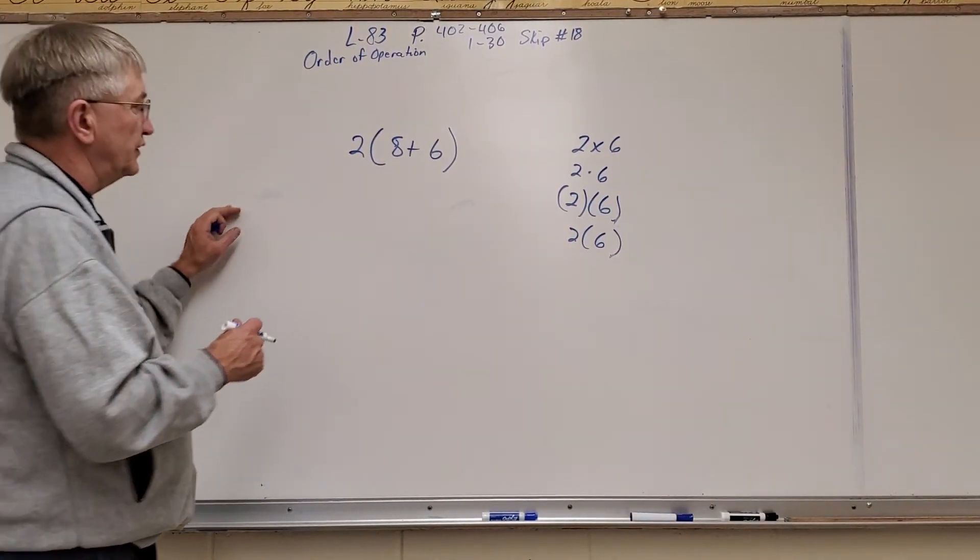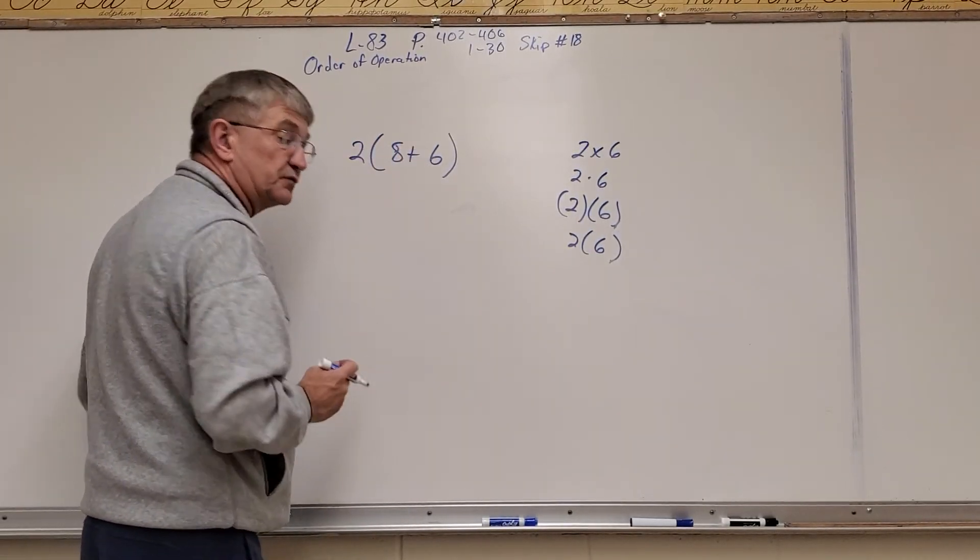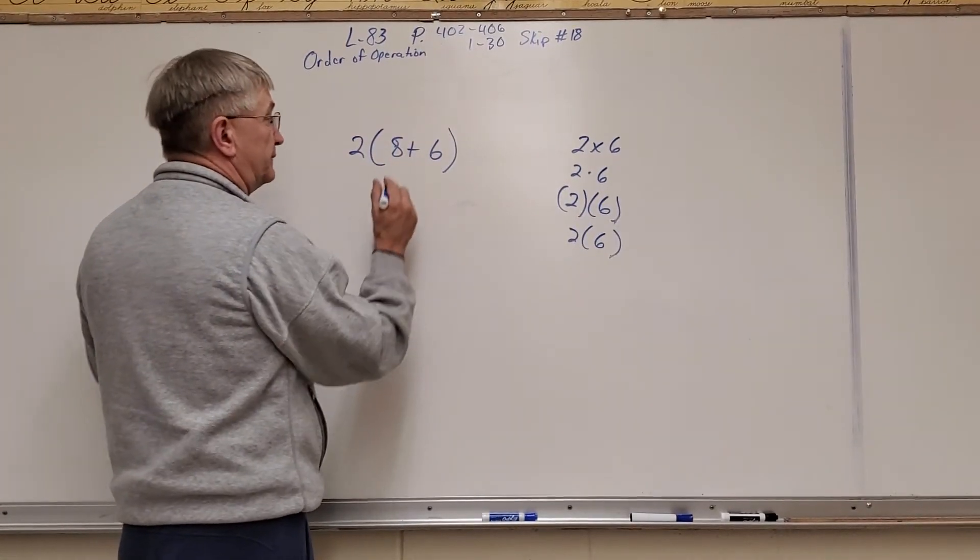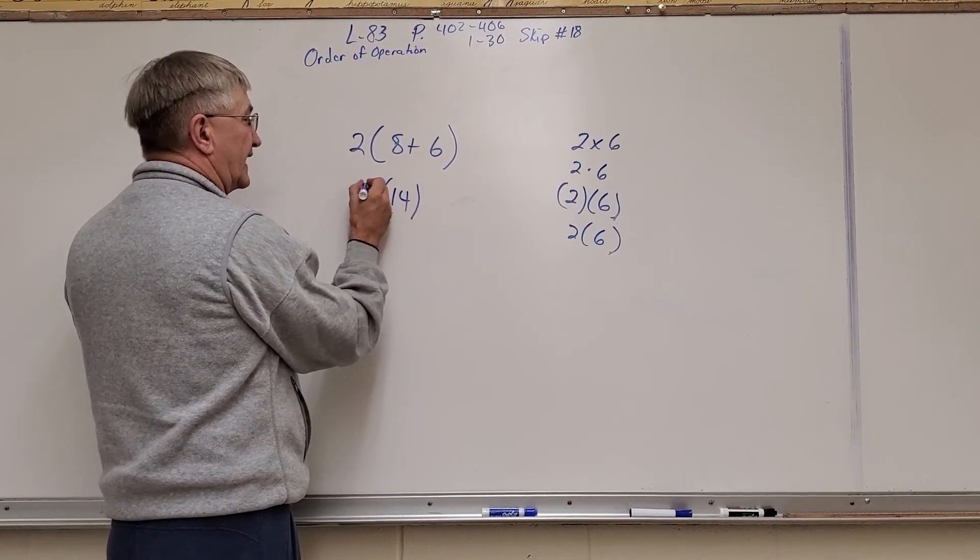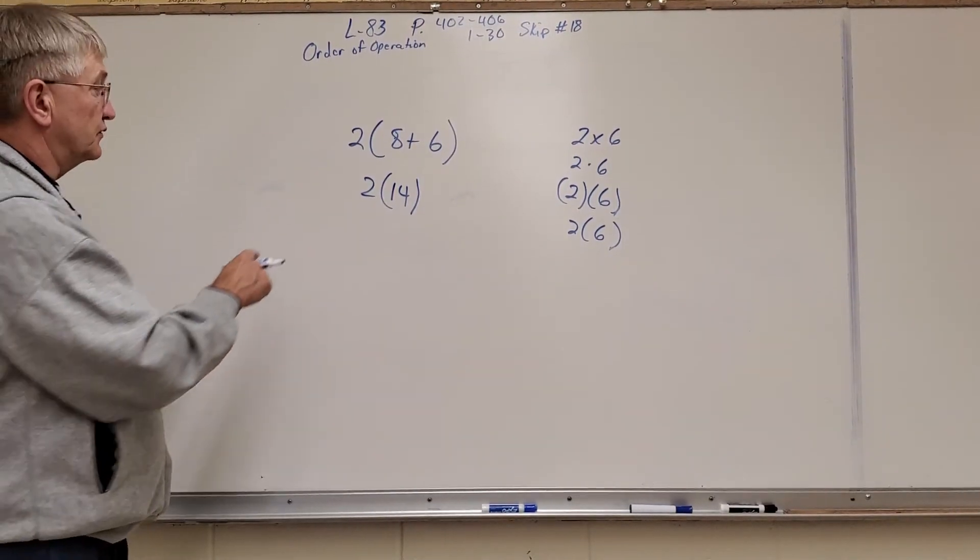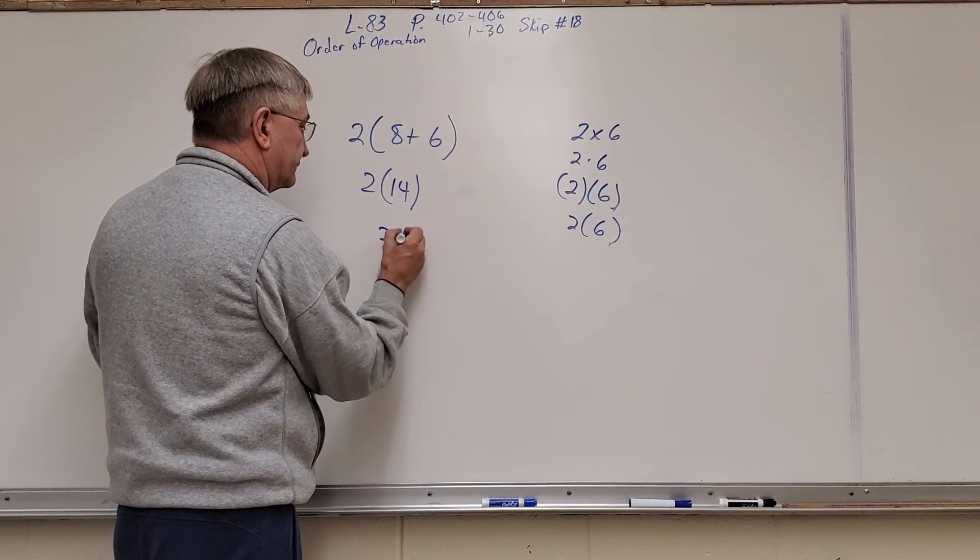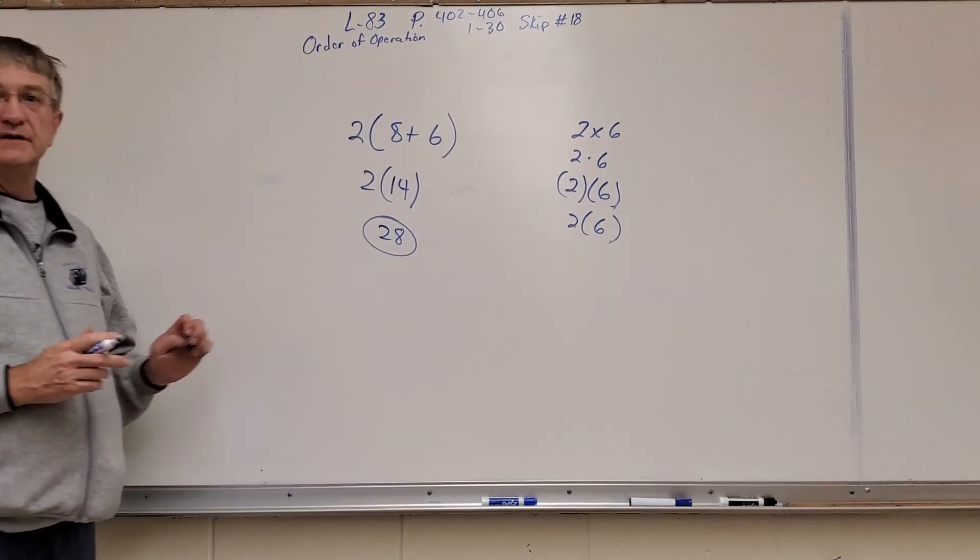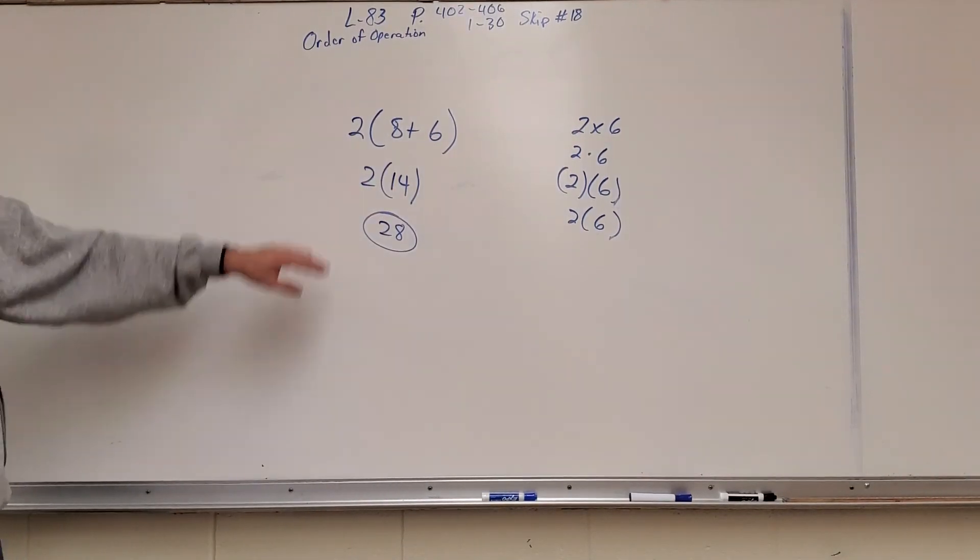So what we're going to do is we're going to follow the rules. The first rule is parentheses work. So that means whatever's in parentheses, we do it first. So 8 plus 6 is 14. Alright, and then I keep my parentheses because it's setting up for multiplication. So 2 times 14, which equals 28. And I'm all done. So, again, I basically did the parentheses work. Then I did my multiplication.